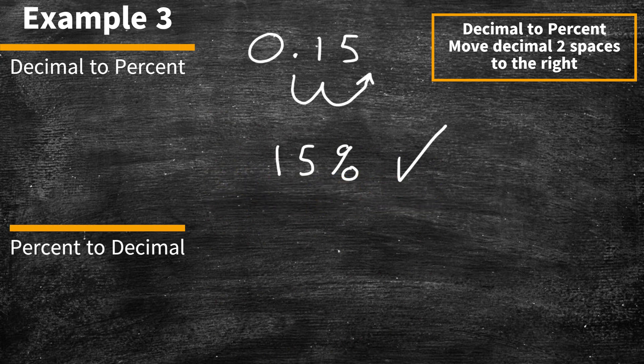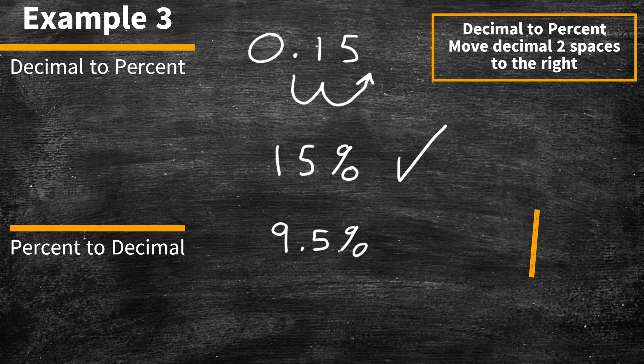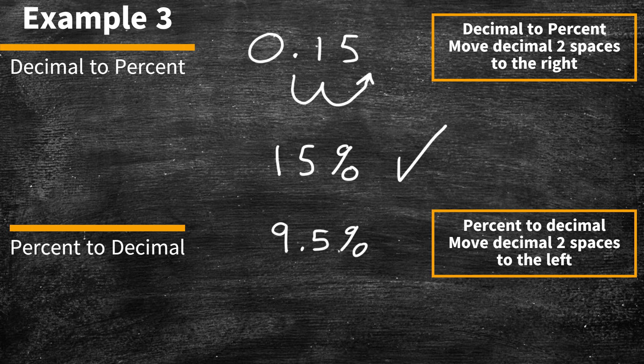Now let's convert a percentage to a decimal. We'll look at 9.5%. To convert a percent to a decimal, we move the decimal two spaces to the left.